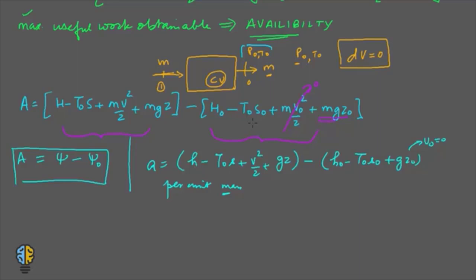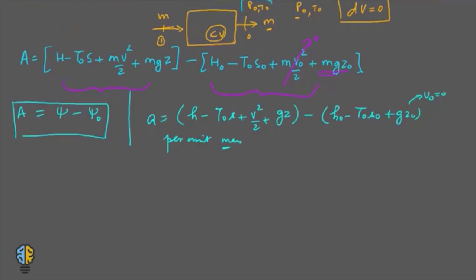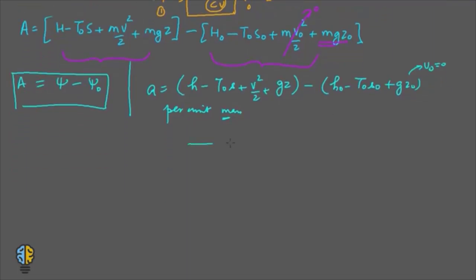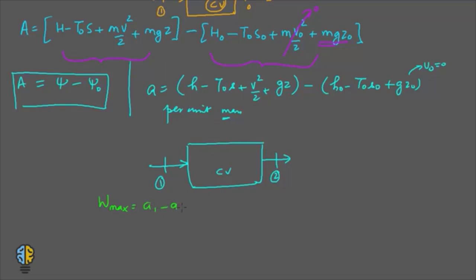Now, if subscripts 1 and 2 denote the states of the system entering and leaving a control volume, the mass enters with subscript 1 and exits with subscript 2. The maximum work achievable is W_max = A1 - A2, meaning the decrease in availability gives the maximum work obtainable for given surroundings, which equals ψ1 - ψ2.